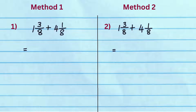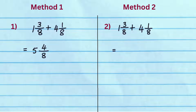Let's look at another example. In method 1, add whole numbers 1 and 4 to get 5. Add the numerators 3 and 1 to get 4, and write the common denominator 8. Fraction 4 by 8 can be reduced to 1 by 2. We get the answer 5 and 1 half.